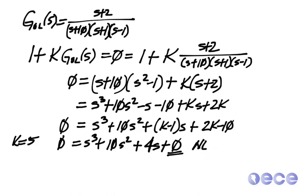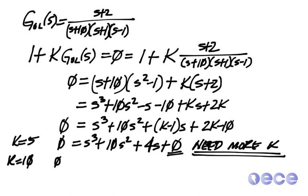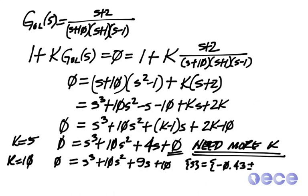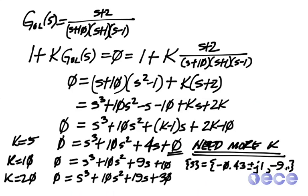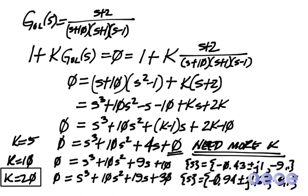So k equals 10, let's see what my pole values are here. We get s equals minus 0.43 plus or minus j 1, so that's not quite right. If k equals 20, now we get s equals minus 0.94 plus or minus j 1.67. That's actually close enough. I think I wanted it to be about minus 1 plus or minus j 2, and so I consider this close enough for me.